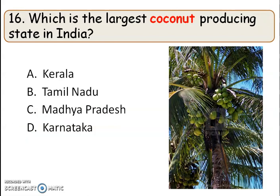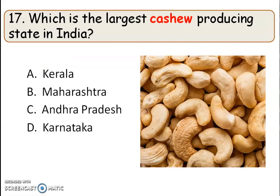The next question: which is the largest coconut producing state in India? The answer is Kerala. Next question: which is the largest cashew producing state in India? The right answer is option B, Maharashtra.